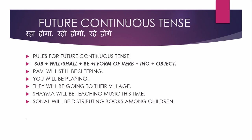जैसे कि present में रहा है, रही है, रहे है; past में रहा था, रही थी, रहे थे; उसी तरह से future में रहा होगा, रही होगी, रहे होगे। जिन वाक्यों के अंत में यह आते हैं, वो future continuous tense होते हैं।